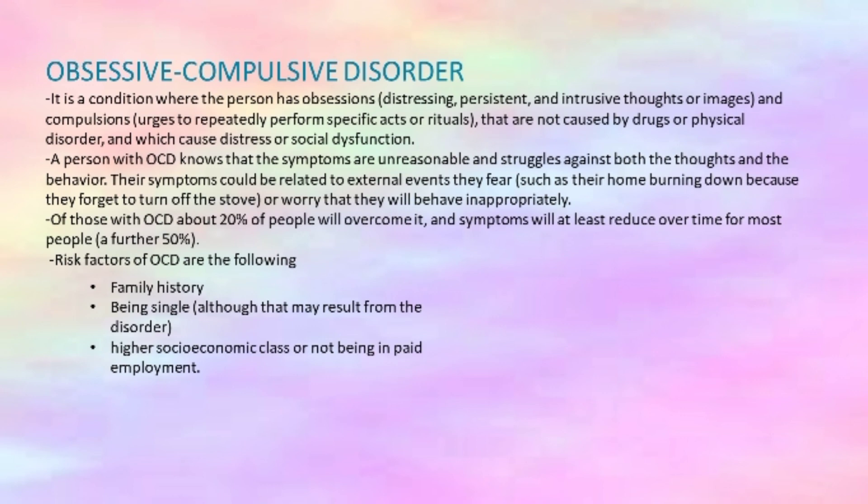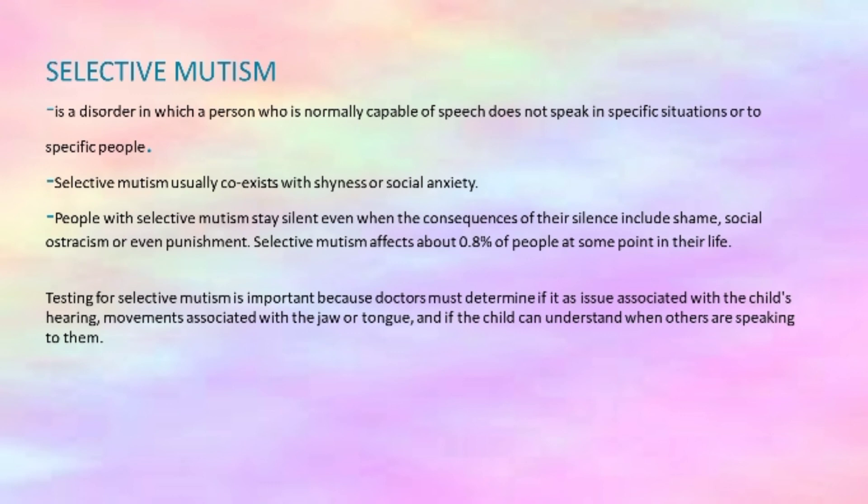The last topic is selective mutism. Selective mutism is a disorder in which a person who is normally capable of speech does not speak in specific situations or to specific people. Selective mutism usually co-exists with shyness or social anxiety. People with selective mutism stay silent even when the consequences of their silence include shame, social ostracism, or even punishment. Selective mutism affects about 0.8% of people at some point in their life. Testing for selective mutism is important because doctors must determine if there are issues with the child's hearing, movements associated with the jaw or tongue, and whether the child can understand when others are speaking to them.